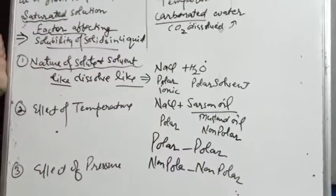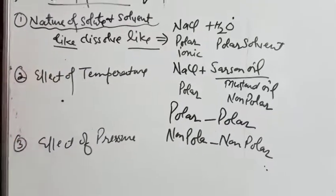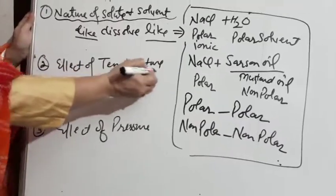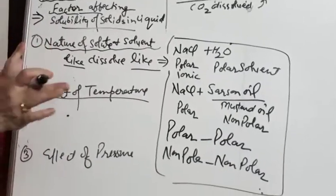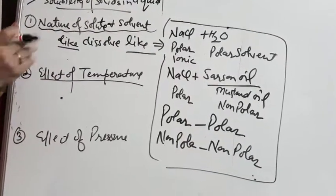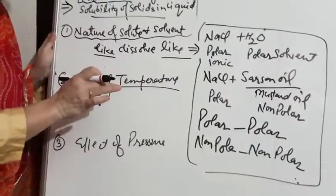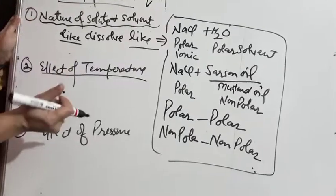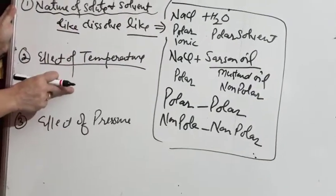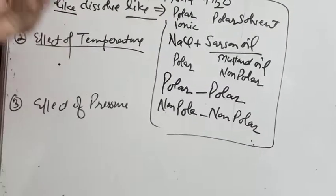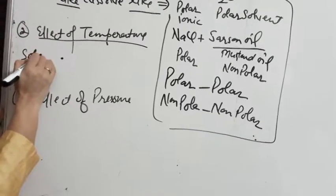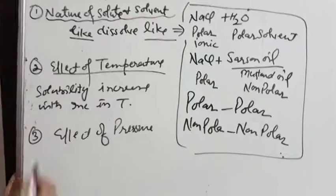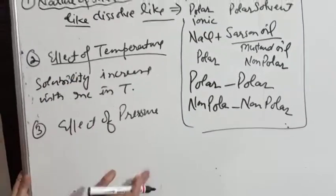So that was the nature of solute and solvent. The second factor is the effect of temperature. If you dissolve sugar in water and it settles at the bottom, heating it causes the sugar to dissolve. You can fill a container with sugar, add just two spoons of water, heat it, and the sugar still dissolves. Temperature is the main driver here — it enhances the solubility of solids. In general, solubility increases with increase in temperature.